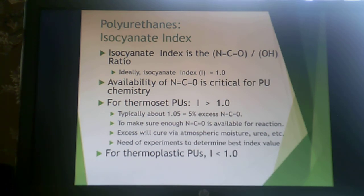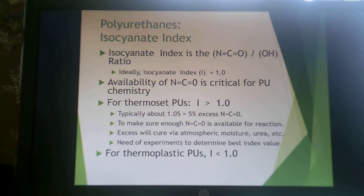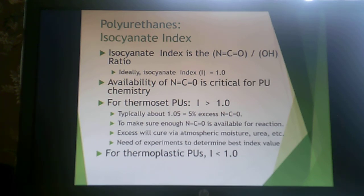The isocyanate index is the ratio of isocyanate groups to hydroxyl groups. Ideally this is 1:1 since they react one-to-one to form urethane. However, having effective NCO groups available for crosslinking is critical, so for most thermosets the isocyanate index is greater than one — typically about 5% excess NCO — to account for any moisture contamination and ensure sufficient crosslinking. Because polyisocyanates are expensive, the excess is kept to a minimum. For thermoplastic polyurethanes, the isocyanate index is usually less than one.